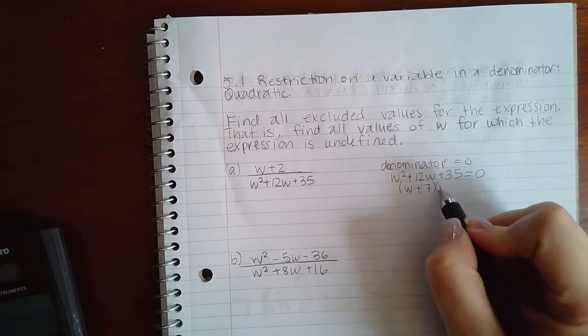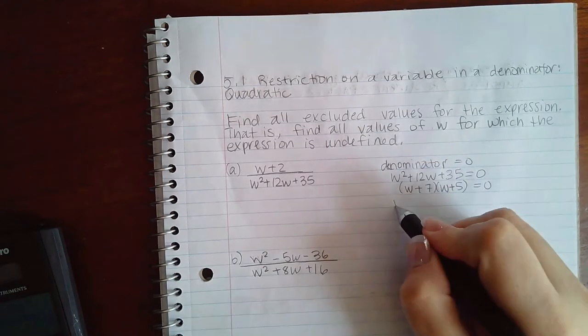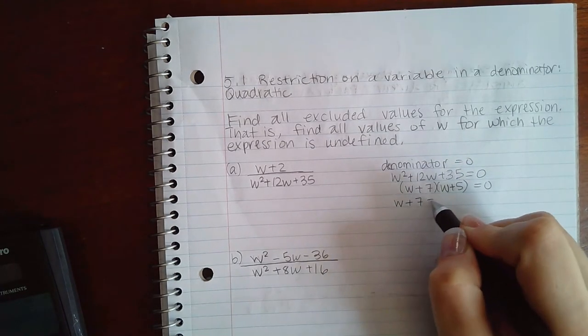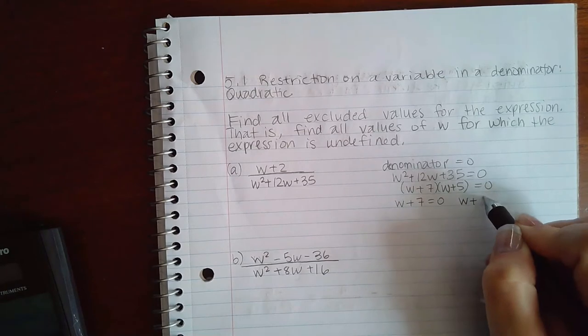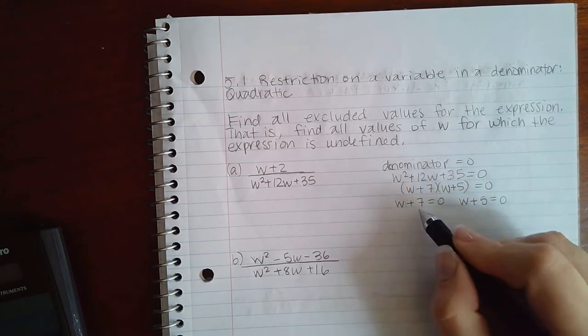I'm going to factor it into W plus 7 and W plus 5. So then I'd use the zero factor property which tells me that product can only equal zero if one of these two factors is zero.